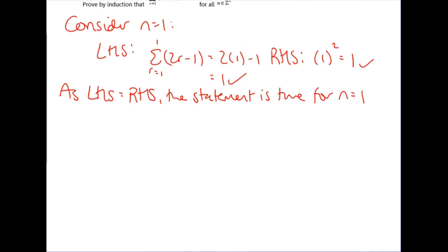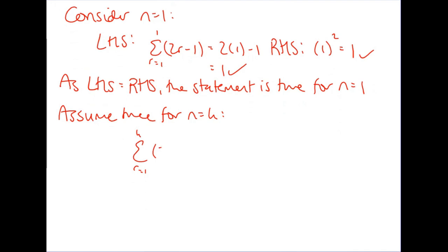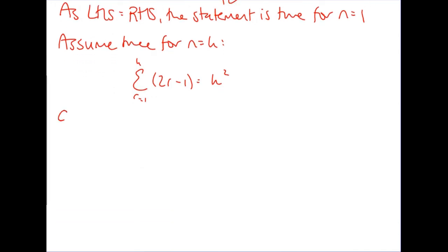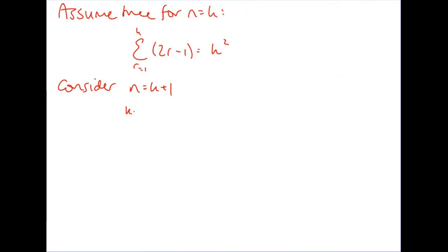Next is your assumption step: assume it's true for n equals k, and write out the original statement with k instead of n. So the r's stay the same — it's the sum from 1 up to k of (2r − 1), and that equals k squared, and we're assuming that this is true. Next is to consider n equals k plus 1: replace n with k plus 1, and that equals (k + 1) squared. Most solutions don't write this out, but I like to do it so we know what we are aiming to end up with.